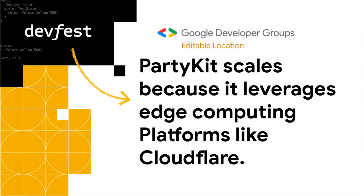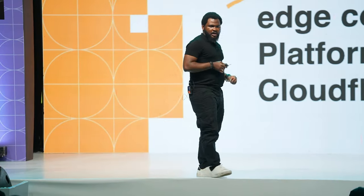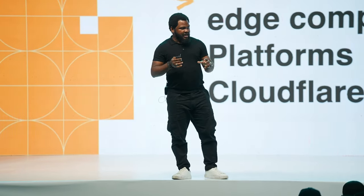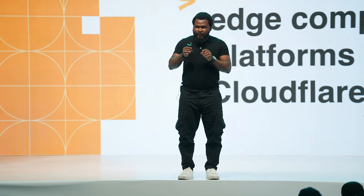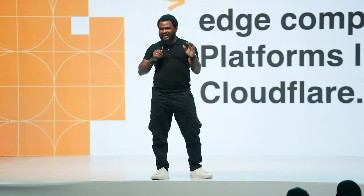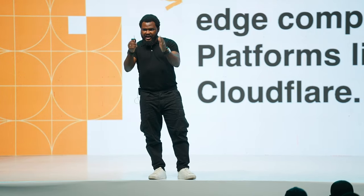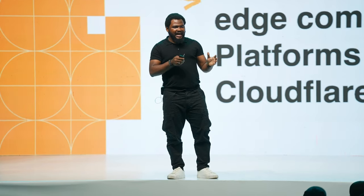PartyKit scales because it was built on top of CloudFlare. CloudFlare has something called durable objects and workers. PartyKit is built on top of those so that when you deploy a PartyKit app, it is deployed to the edges of the world. Wherever the client is — whether they're in front of you or in some remote part of the world — it's very easy for them to connect, and the connection will be smooth, fast, and there will be no buffering.